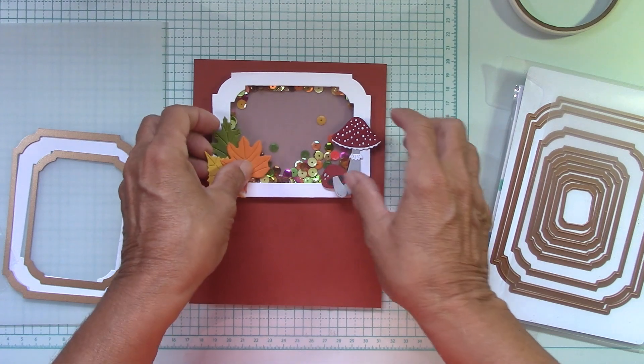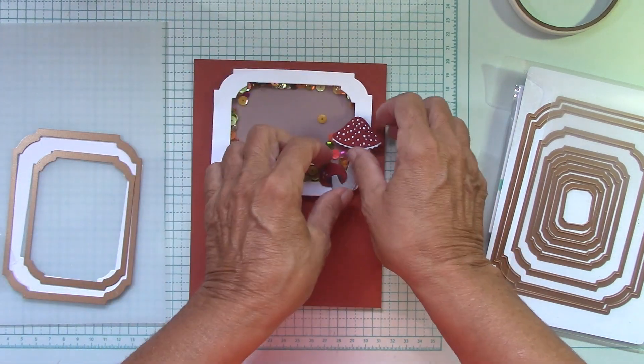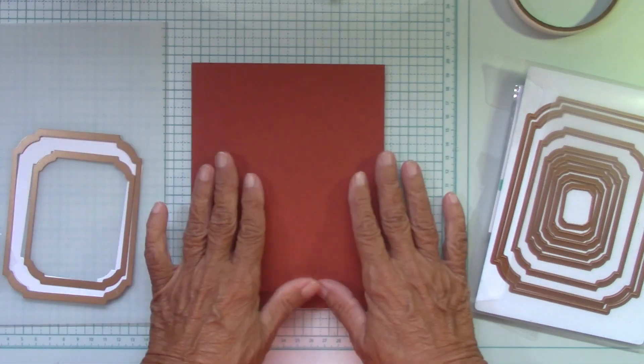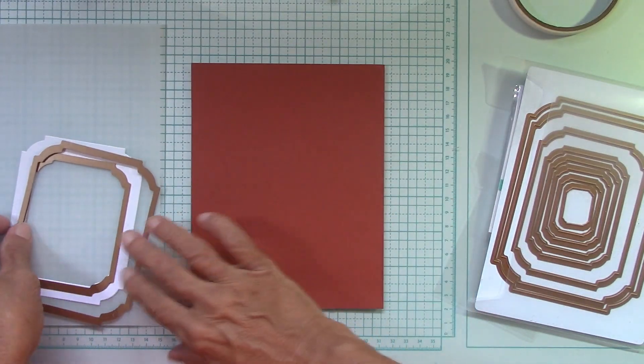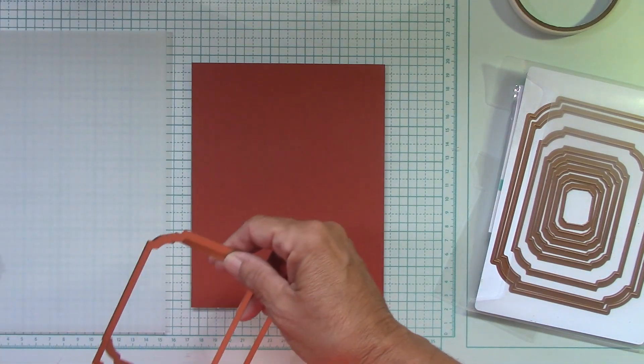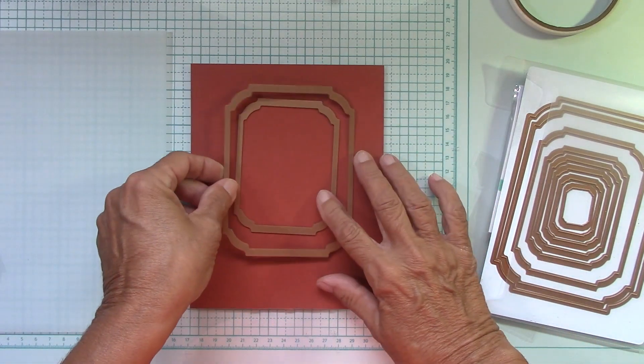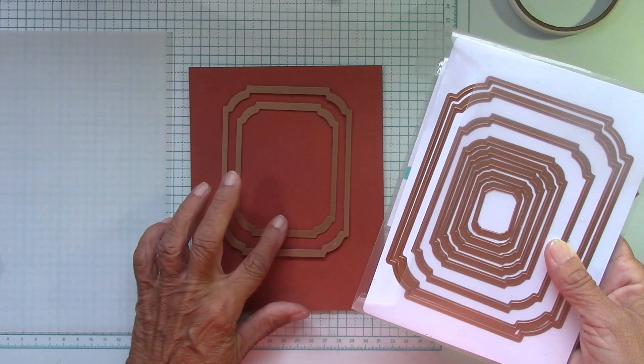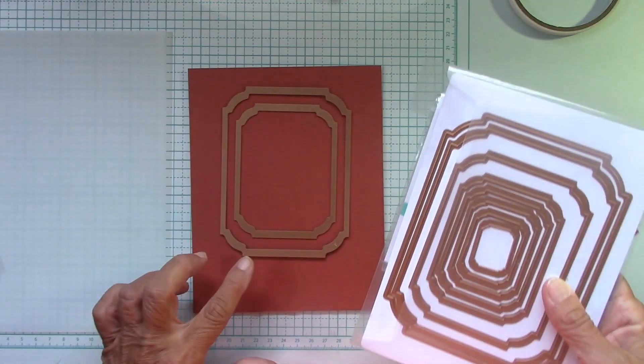Let me move this to the side. I already put these together. The main part is the shaker. Here's my paper. When you're picking out something to do a shaker card with, always skip a die. You need that nice frame around there.